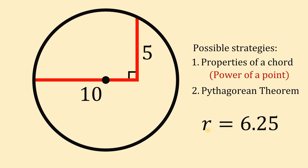Therefore, using any of these two possible strategies, properties of chords and power of a point or the chord chord power theorem, and using the Pythagorean theorem, we get the same answer. The radius of the circle is 6.25 units given this condition. And as always, we are done.